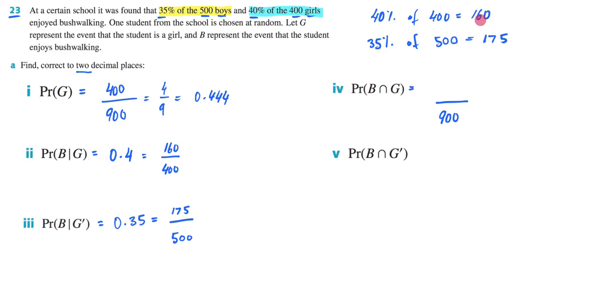So that's going to be 160 students. 160 students represents the girls who enjoy bushwalking. So that's going to be what we're thinking of, the intersection point. And 160 over 900 would be 8 over 45. And in the decimal, it's going to be 0.178. Again, the back of the book has it in three decimal places, and that's why I'm doing it to that.